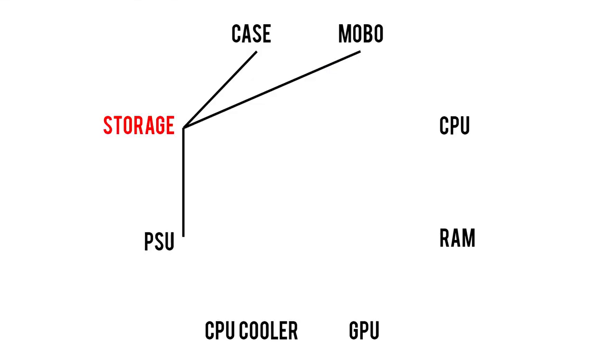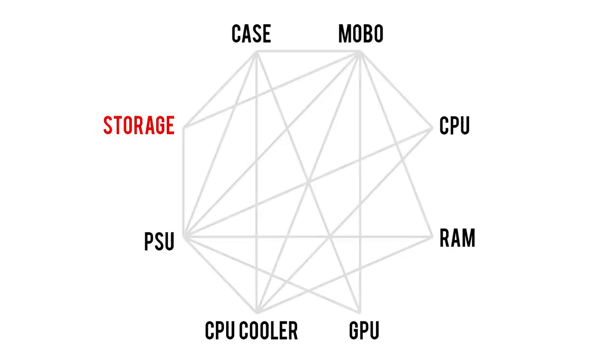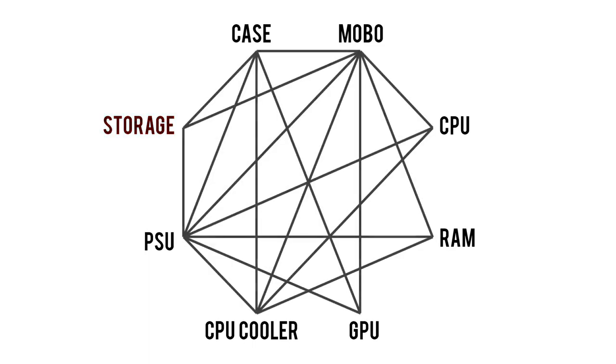Finally, that leaves us to storage, but by now we've exhausted all of its various part associations, thus concluding today's lesson on the Octagon of Compatibility. I know this was a lot of thick information to run through, guys, and there's a fair chance that I overlooked a few things myself. So if you're watching this video as a seasoned PC builder, please share any compatibility tips that I might have missed in the comments below, which I'm sure our rookie tech friends will appreciate.